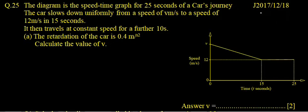Question 18, Paper 1, Variant 2, June 2017. The diagram is the speed-time graph for 25 seconds of a car's journey.